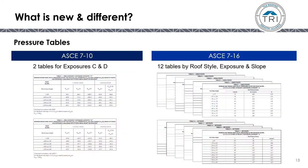The pressure tables have changed as well. There used to be two tables for Exposures C and D that applied to all roofs. In the new RAS-127, there are 12 tables depending on the roof style, the exposure category (C or D), and the roof slope. It is important to know which table to use to look up the correct values.